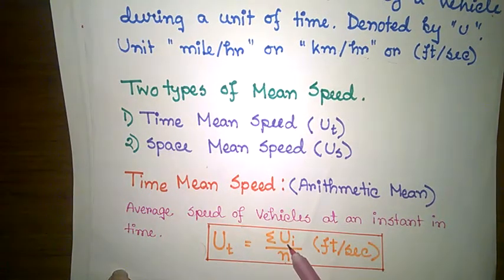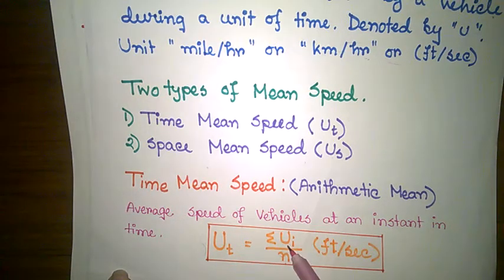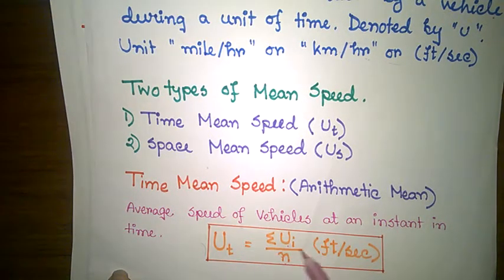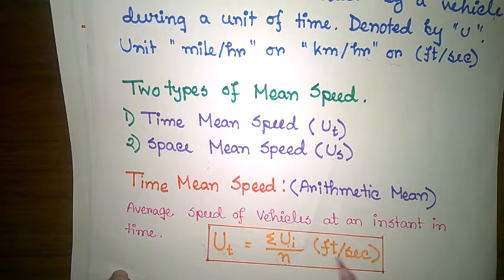Here, ui is the speed of the i-th individual vehicle, and n is the total number of vehicles. Time-mean speed is the arithmetic mean of vehicle speeds, with units of distance per second.